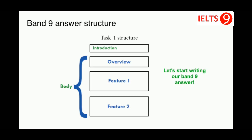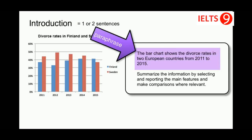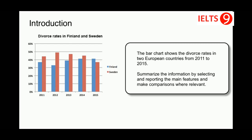Now you know the answering strategy, so let's start writing our band 9 answer. The introduction is one or two sentences where you simply paraphrase the information from your question. You should mention what your graph shows and for what period of time. Instead of writing 'the bar chart shows the divorce rates in two European countries from 2011 to 2015', we should write a paraphrased version using synonyms.